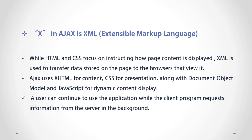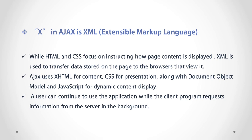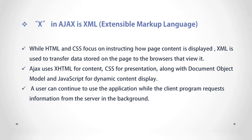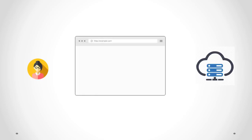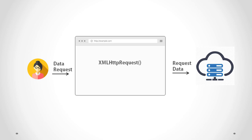Now let's understand how AJAX works. AJAX communicates with the server using the XMLHttpRequest object. Here we have a user, a browser, and a web server. The web user interacts with the browser and requests data from the server. The server will call the JavaScript XMLHttpRequest object, then the browser will send the HTTP request to the web server.